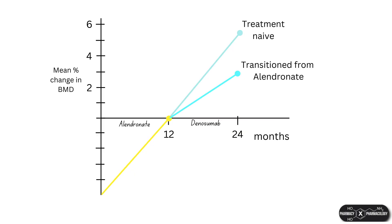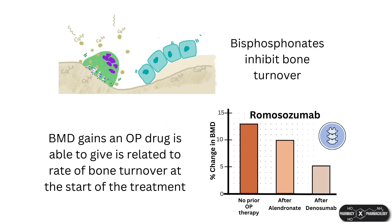In general, the response to any therapy given after alendronate is smaller than when given to a treatment-naive patient. This is because the BMD increase of an osteoporosis drug is directly related to the rate of bone turnover when treatment is started, and bisphosphonates inhibit the rate of bone turnover.